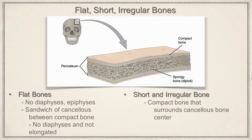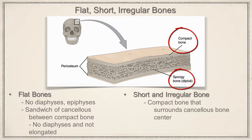In this lecture, we're going to look at flat, short, and irregular bone anatomy. Flat bones have no diaphysis or epiphysis. It's a sandwich of cancellous bone between compact bone, as we see here in the picture.